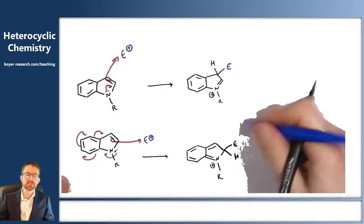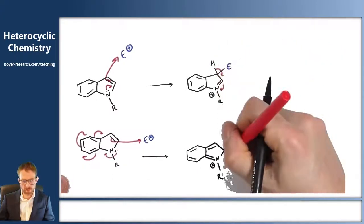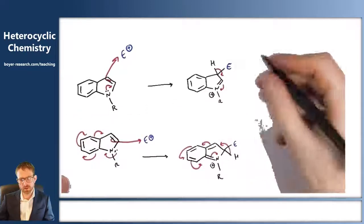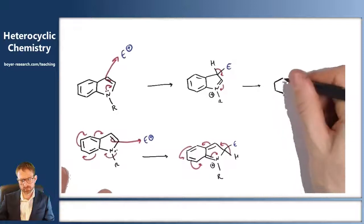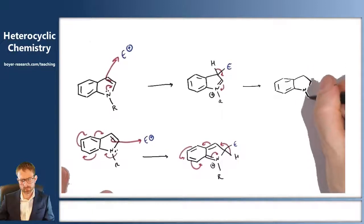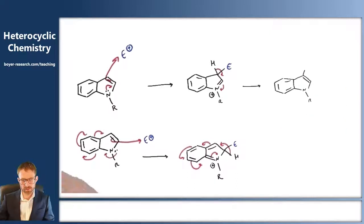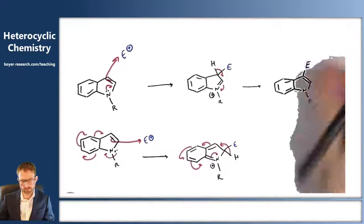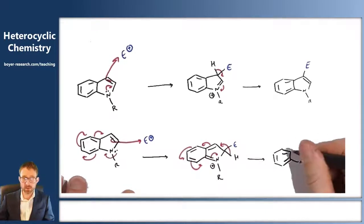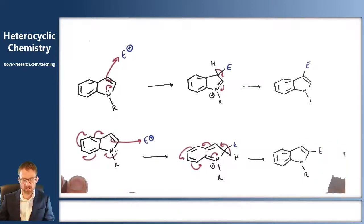We complete the mechanism by regaining aromaticity through loss of our hydrogen to give the corresponding products: the 3-substituted indole and the 2-substituted indole. We don't see the 2-substituted product because to get there we have to break the entire aromaticity of the system.